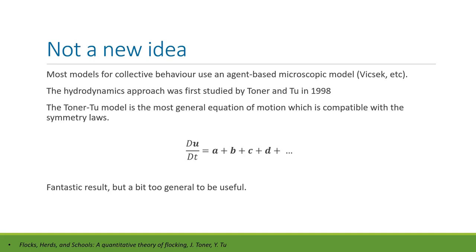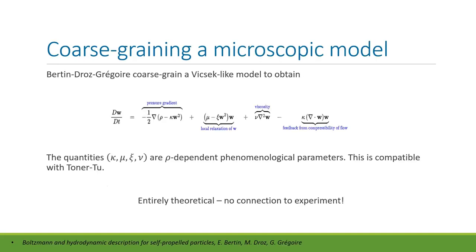Toner and Tu's paper is really good — they essentially write down the most generic form of the Euler equation compatible with symmetry laws. The right-hand side includes derivatives of density and velocity up to second order in spatial derivatives. It's a great result but unfortunately extremely general — literally the most general form compatible with the symmetries of nature. There are 10 different terms that could be there.